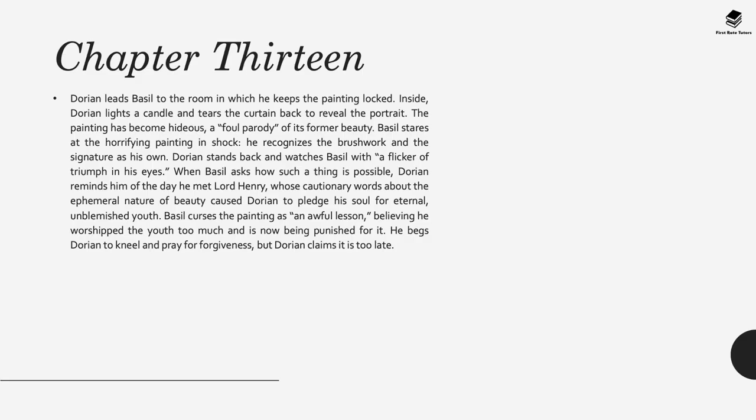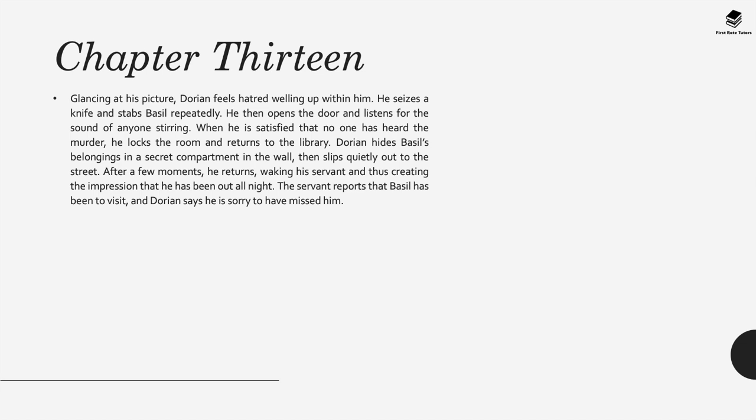In chapter thirteen, Dorian leads Basil to the room where he keeps the painting locked inside. Dorian lights a candle, takes him up, and tears back the curtain to reveal the portrait, which is now hideous. Basil stares at it, horrified, while Dorian stands back and watches him with, as the novel says, 'a flicker of triumph in his eyes.' When Basil asks how such a thing is possible, Dorian reminds him of the fateful day he met Lord Henry, whose cautionary words about the ephemeral nature of beauty caused him to pledge his soul for eternal unblemished youth. Basil curses the painting as an awful lesson, believing he worshipped Dorian's youth too much and is now being punished for it. He begs Dorian to kneel and pray for forgiveness, but Dorian claims it's too late. Glancing at his picture, Dorian feels hatred welling up within him. He seizes a knife and stabs Basil repeatedly, killing him.